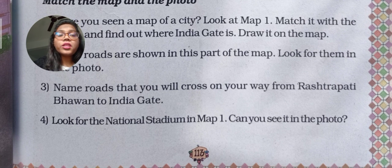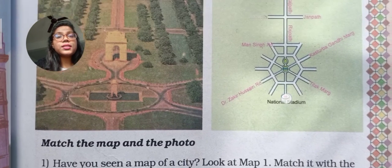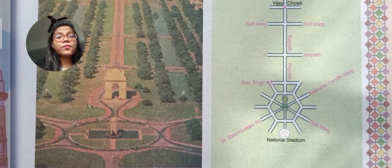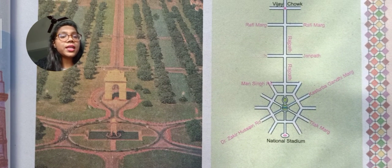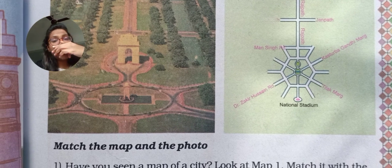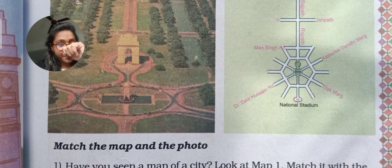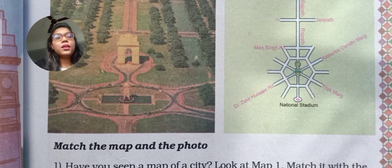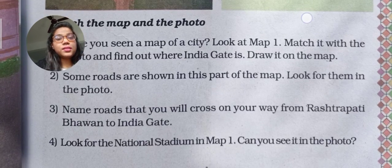Now look for the National Stadium in Map 1. Can you see it in the photo? The National Stadium is located here at the end of the map. You can mark it as the National Stadium.